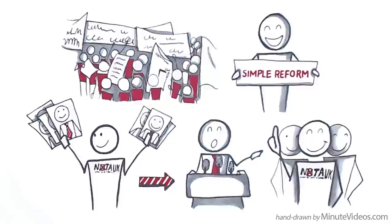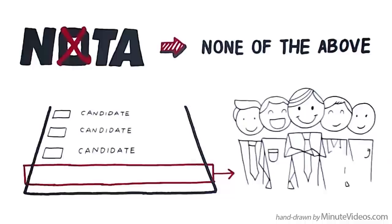Nota stands for none of the above. It's an option that can be added to the bottom of a ballot paper to enable voters to reject all available candidates.